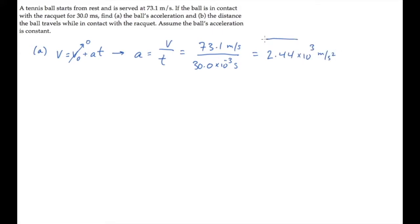Part B asks us to find the distance the ball travels while it's in contact with the racket. There are several ways to solve this part of the problem. One is shown here using this kinematic equation.